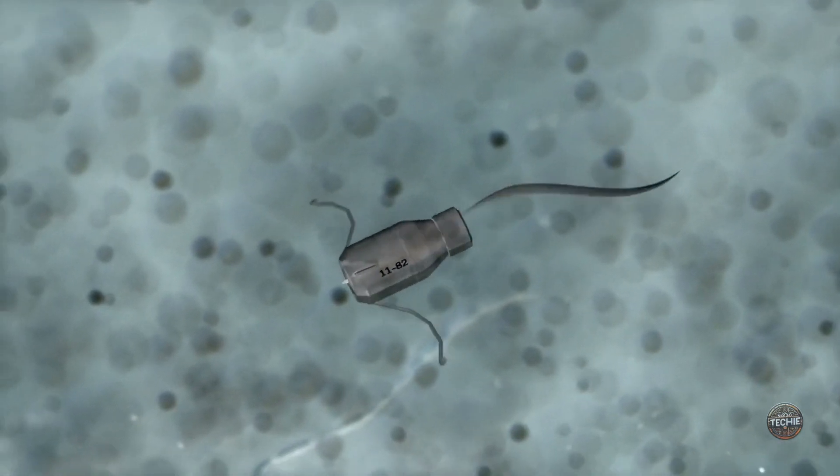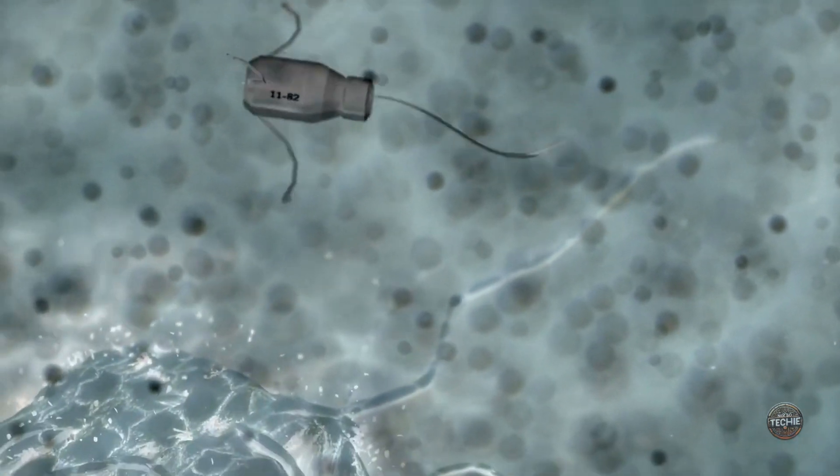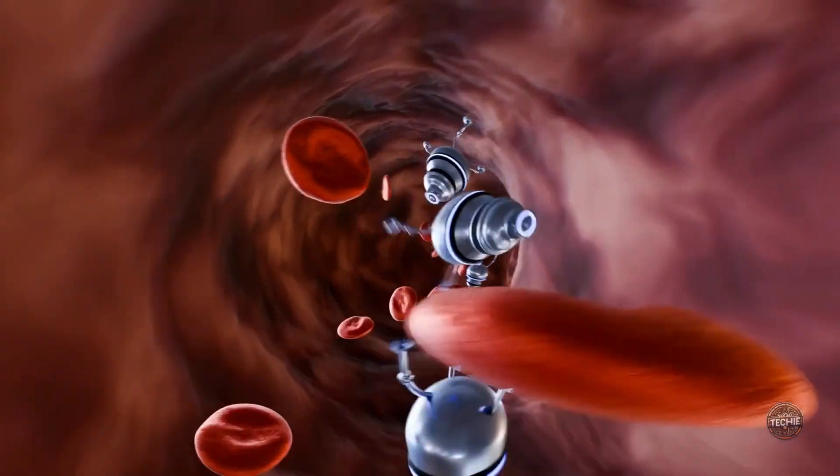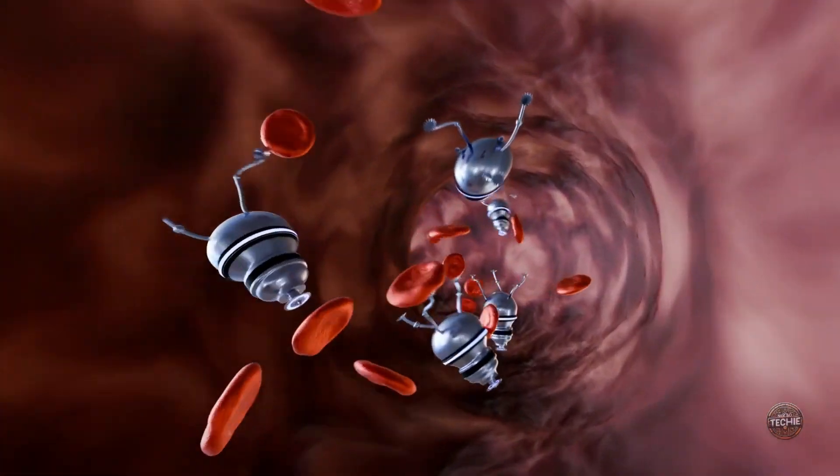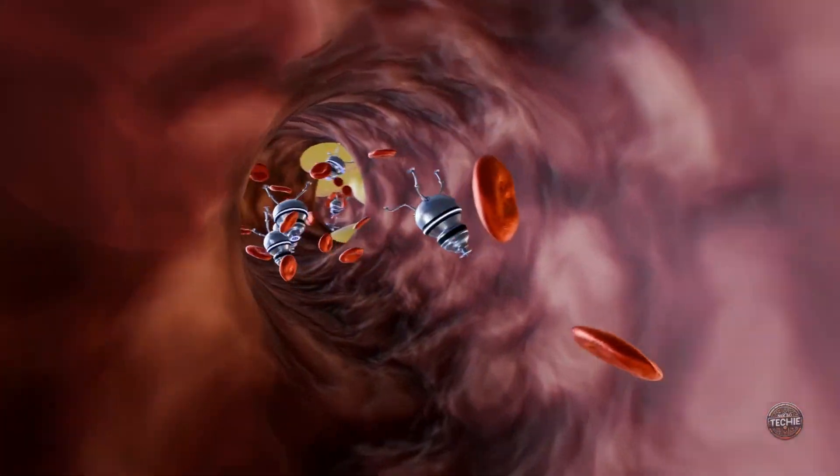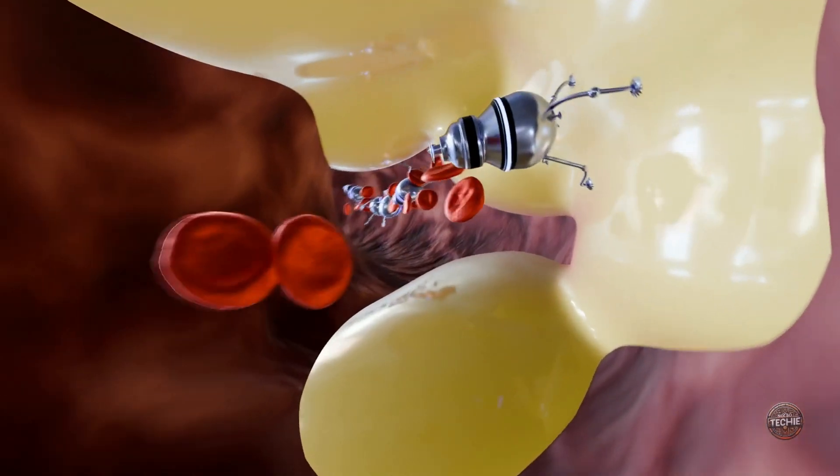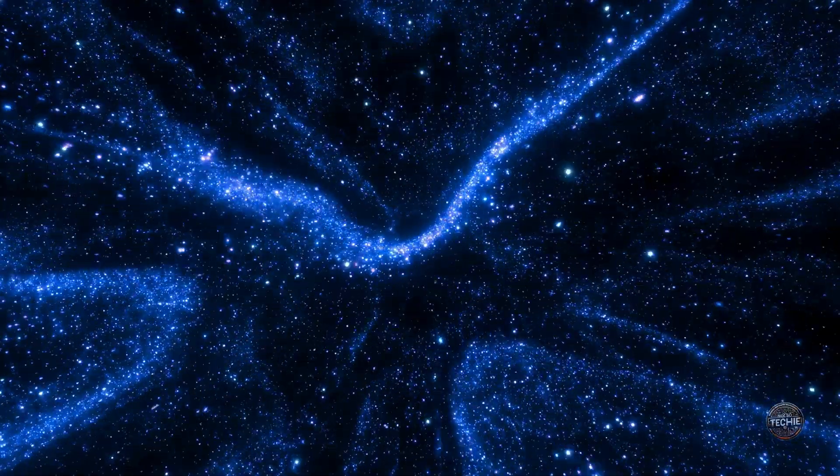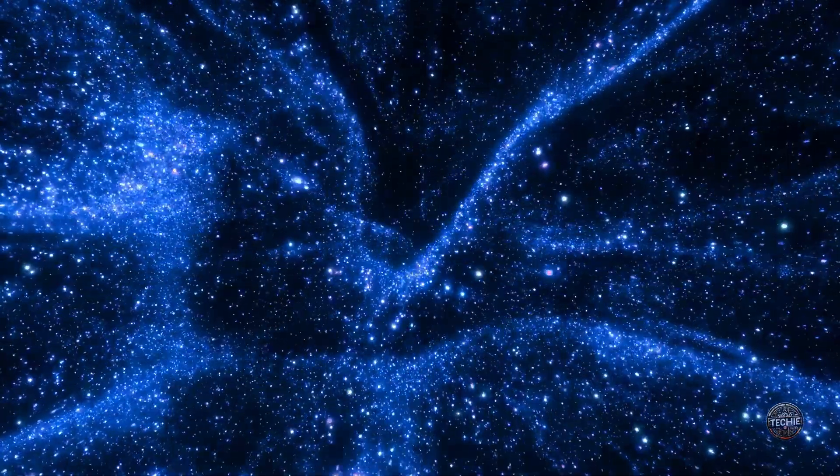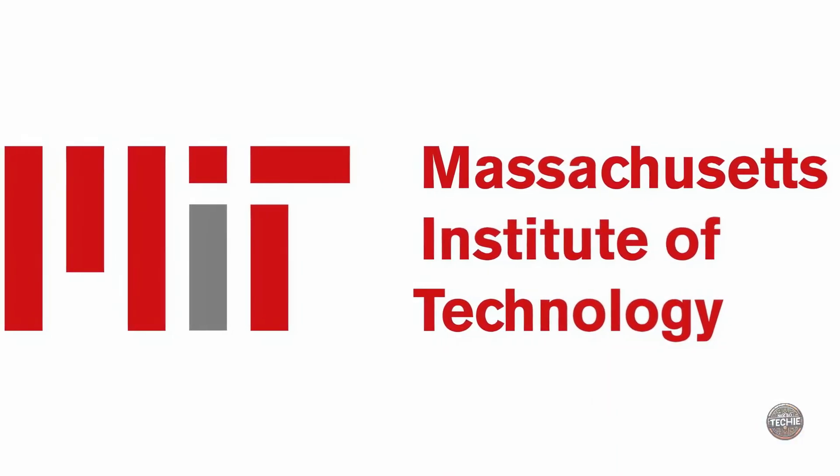Ever imagined robots as small as a single human cell working inside your body? What if these tiny robots could deliver medicines, inspect your pipelines, or explore the hardest-to-reach places, all powered by a battery smaller than a grain of sand? Sounds like something out of a sci-fi movie, right? Well, MIT just made it possible.